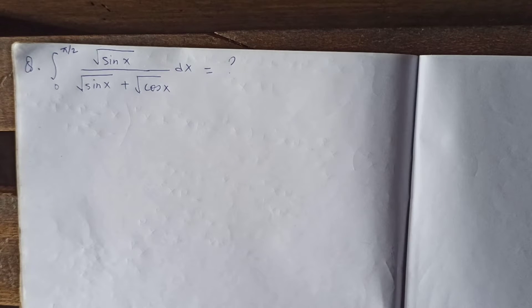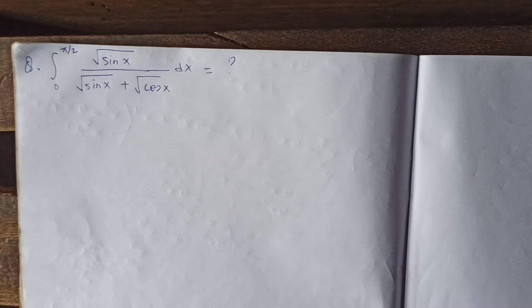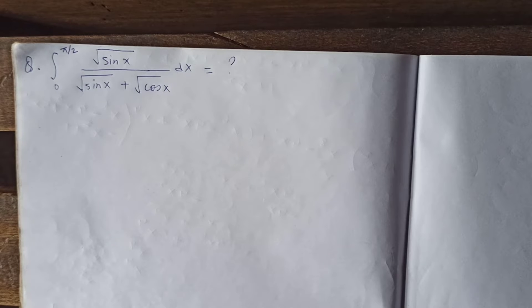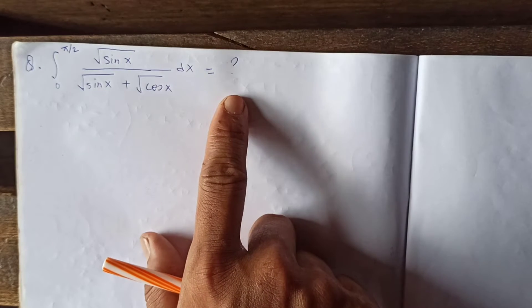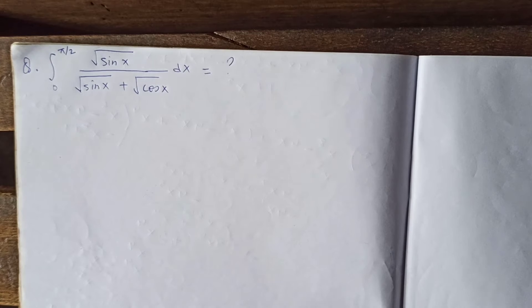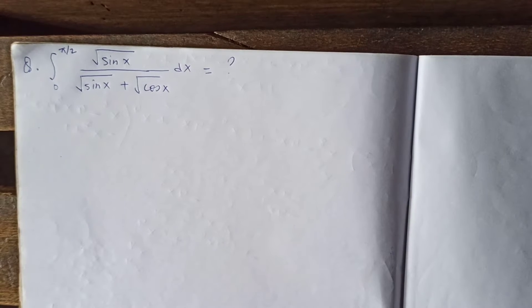Thanks for watching my video. Today we are going to evaluate this definite integral: the integral from 0 to π/2 of √(sin x) divided by (√(sin x) + √(cos x)) dx. Let's calculate and start.